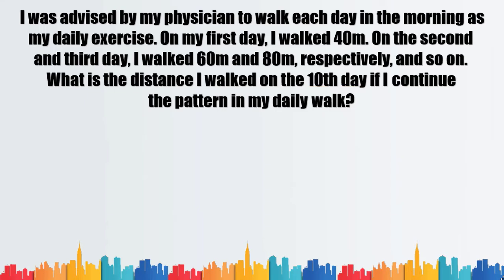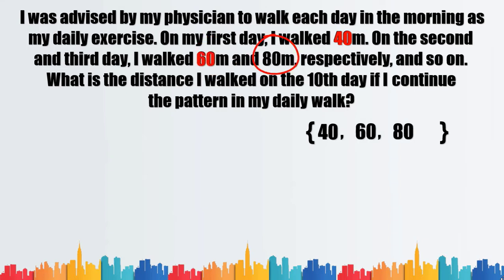Let us create a set based on the given: 40 meters for the first day, 60 meters on the second day, then 80 meters on the third day, and so on. We are asked what the distance would be on the 10th day, therefore the value of n is equal to 10.